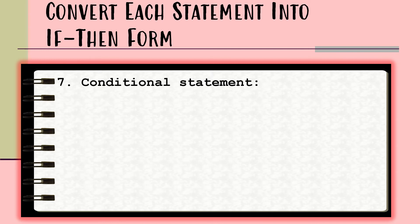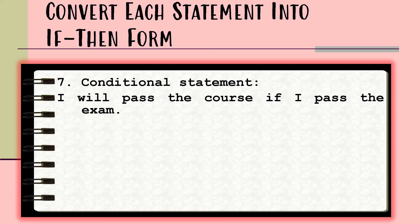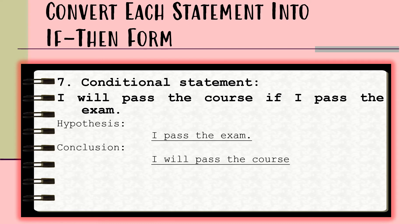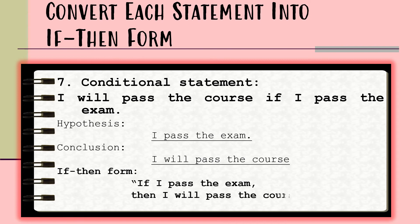For example number seven, we have the conditional statement: 'I will pass the course if I pass the exam.' The hypothesis is 'I pass the exam,' while the conclusion is 'I will pass the course.' Converting this into the if-then form, we have: 'If I pass the exam, then I will pass the course.'